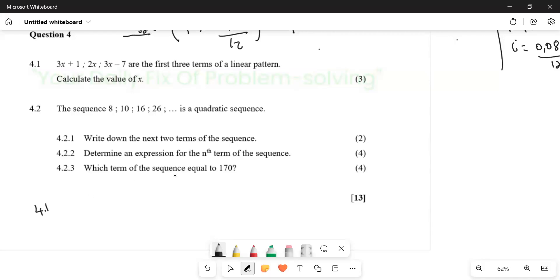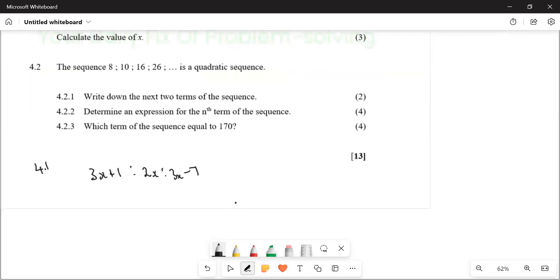We have a pattern: 3x plus 1, 2x, and then 3x minus 7 are the first three terms of a linear pattern. The question says calculate the value of x.